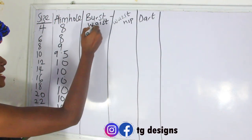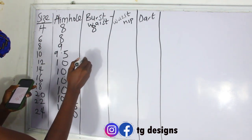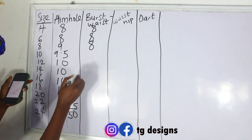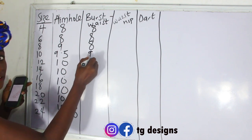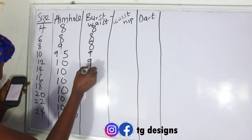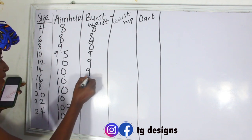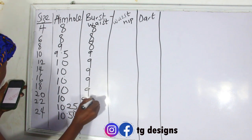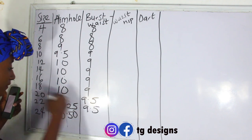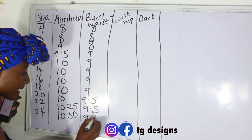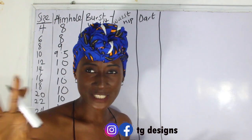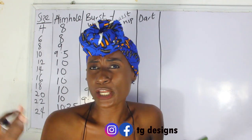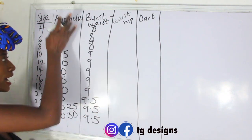Here are the bust-to-waist distances: size 4 — 8 inches; size 6 — 8 inches; size 8 — 8 inches; size 10 — 9 inches; size 12 — 9 inches; size 14 — 9 inches; size 16 — 9 inches; size 18 — 9 inches; size 20 — 9.5 inches; size 22 — 9.5 inches; size 24 — 9.5 inches. You'll notice these measurements fall into groups, which I'll explain shortly.